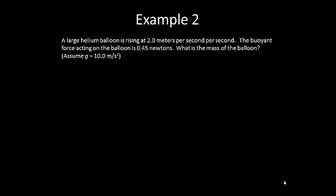Let's consider another problem. Example 2, a large helium balloon is rising at 2.0 meters per second per second. The buoyant force acting on the balloon is 0.45 newtons. What is the mass of the balloon? Now note that the 2 meters per second per second is an acceleration. We know that because of the units, even though it hasn't explicitly said this. So first, what are we trying to find? We're trying to find the mass of the balloon. Let's draw our free body diagram. We know we're going to have a buoyant force upwards and the weight down.